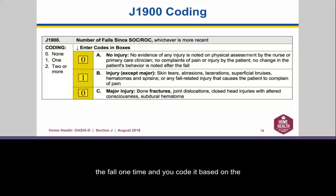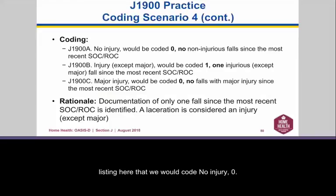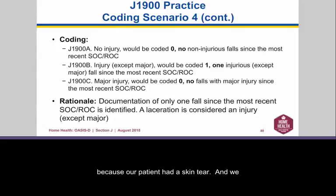Let's try another coding scenario, scenario number 4: code no injury as 0, code injury except major as 1 because the patient had a skin tear, and code major injury J1900C as 0. A laceration is an injury, but it is not a major injury.